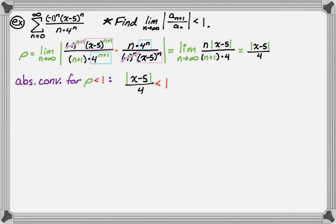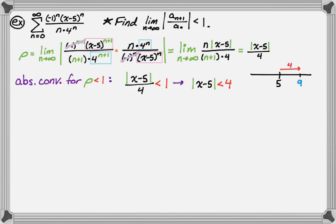So rho less than 1 means the absolute value of x minus 5 is less than 4. That 4 is actually called the radius of convergence, and many questions just ask for that. But we want the full interval. I find it easiest to draw a number line — put 5 at the center, go 4 in either direction: 4 to the right gives 9, 4 to the left gives 1. So the open interval on which this definitely converges is between 1 and 9.